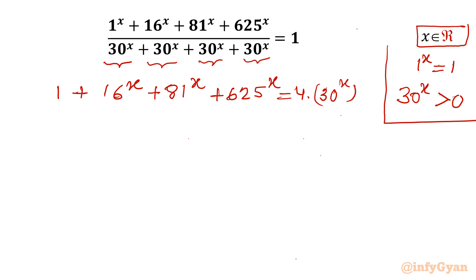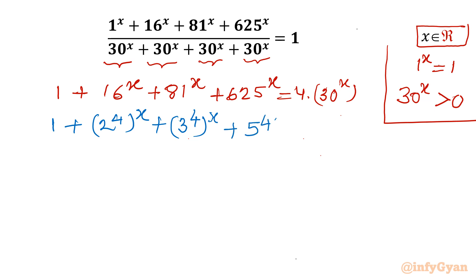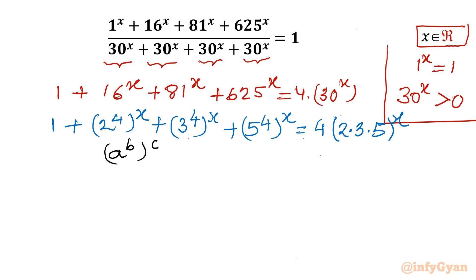Now I will use exponents. 16 can be written as 2 to the power 4, so 2^4 whole to the power x. 81 can be written as 3^4. And on the right-hand side, we factorize 30 as 2 times 3 times 5, so (2·3·5) to the power x. Now I will use the exponent property that a^b whole to the power c equals a^c whole to the power b — swapping the exponents. So I will swap the powers in our equation.